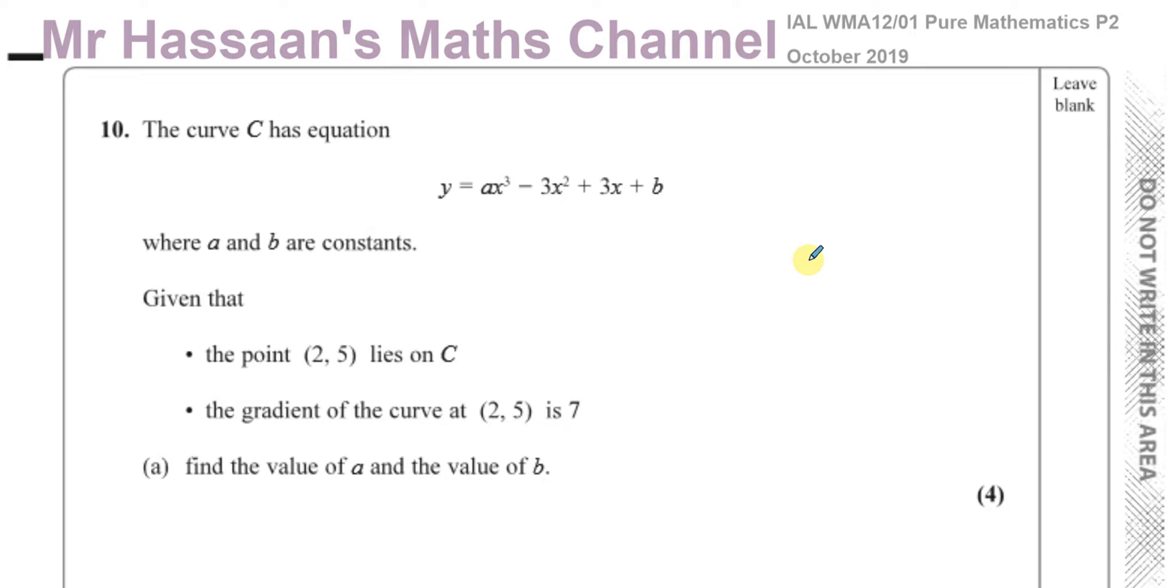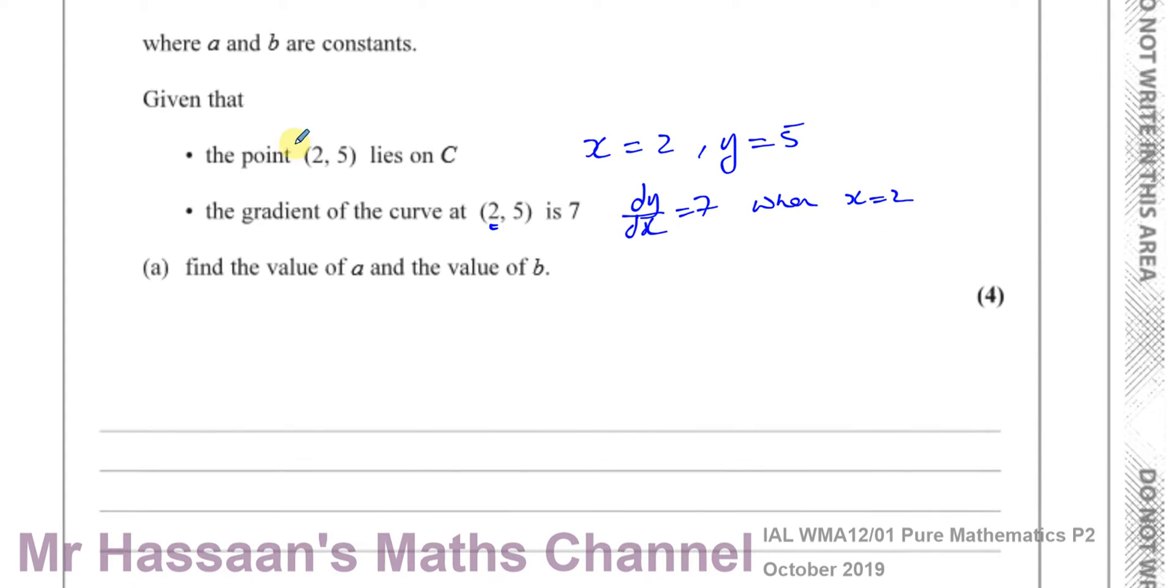We have a curve called C with equation Y equals AX cubed minus 3X squared plus 3X plus B, where A and B are constants. We're given that the point (2, 5) lies on the curve C, and that the gradient of the curve at (2, 5) is 7. These two key pieces of information are going to help us find the values of A and B. So first, what they're telling us is that when we substitute X as 2 into this equation, what should come out is 5.